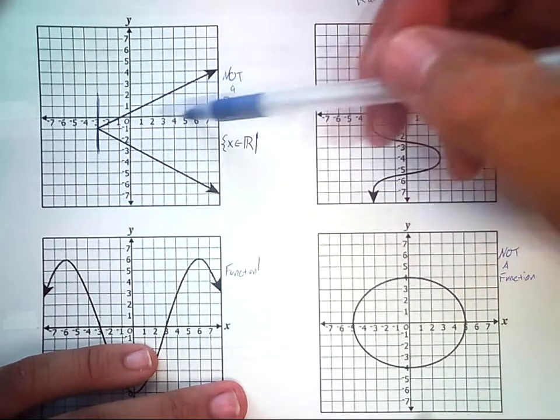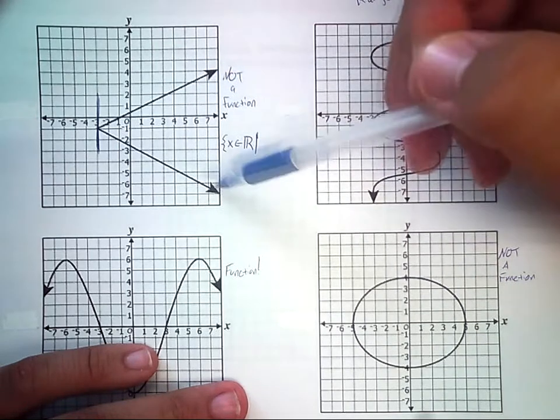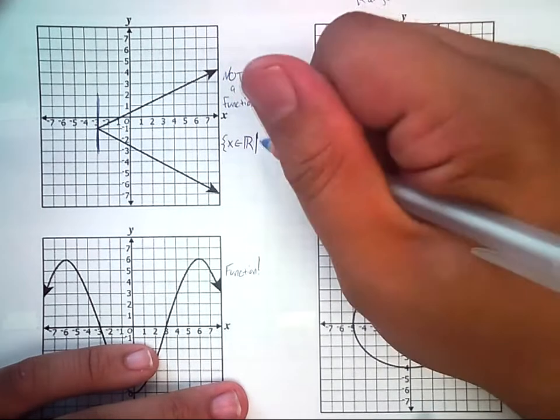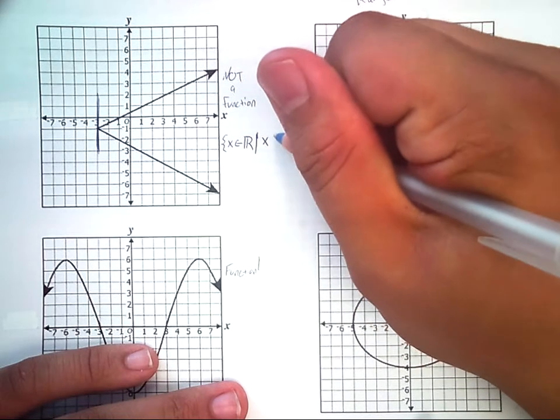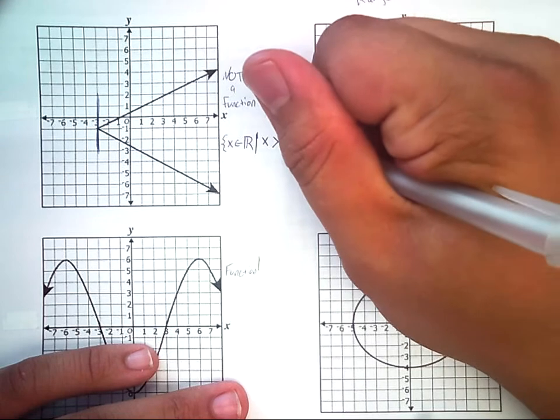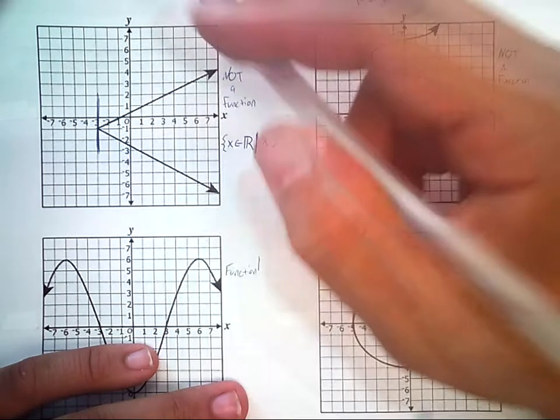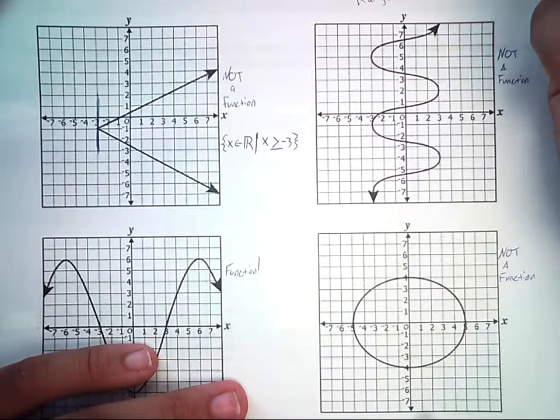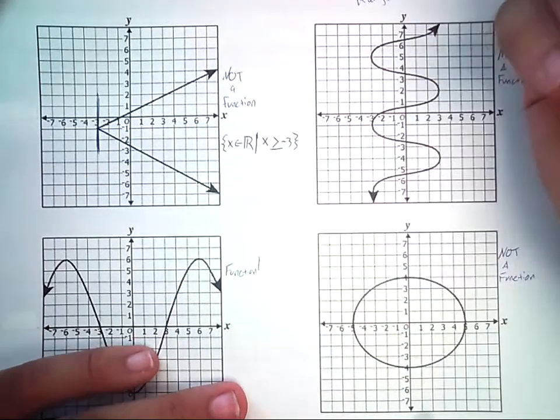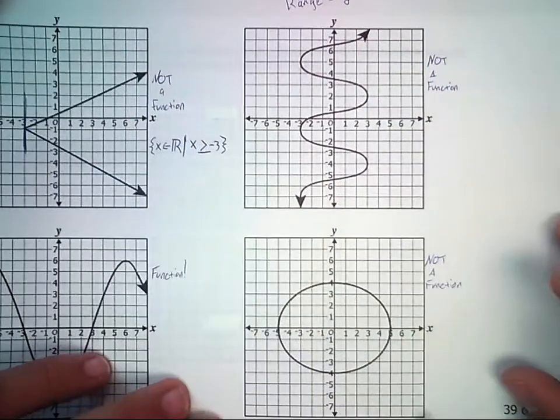But when I look to the right, it's going to go forever, because this graph goes forever. So x is going to be greater than negative 3. Now, one last question. Could it actually be negative 3? Yes, it can. Because if you look, the graph goes right there.